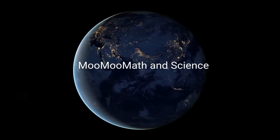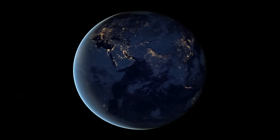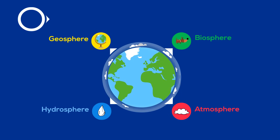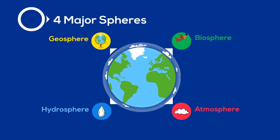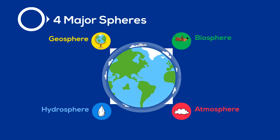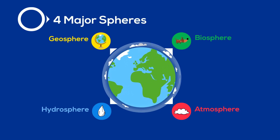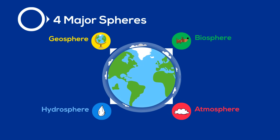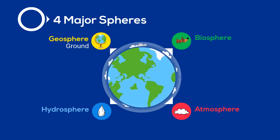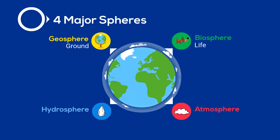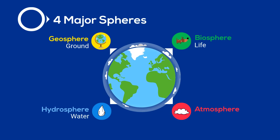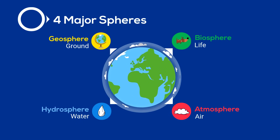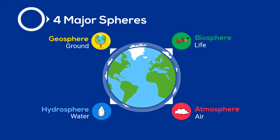Welcome to MooMooMath and Science. In this video, I'd like to talk about the four spheres of the Earth. The Earth can be divided into four major spheres. The names of each of these spheres come from the Greek words that describe what they're made of: geo for ground, bio for life, hydro for water, and atmo for air. Let's take a look at each of these four spheres in a little more detail.